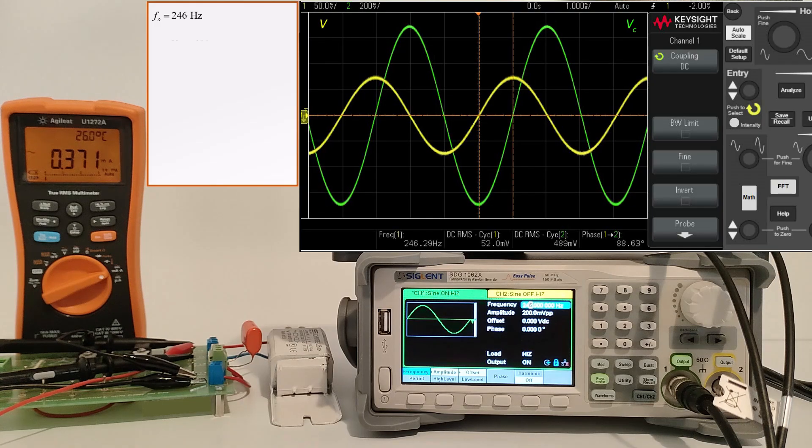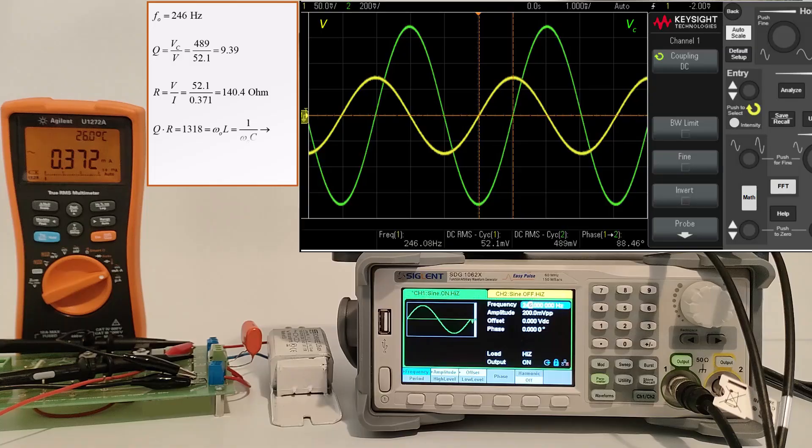The overvoltage at the resonant frequency is defined by the quality factor. The effective resistance of the coil is much higher than the DC value due to the skin effect and the proximity effect.